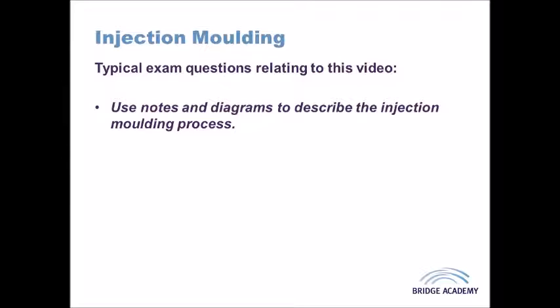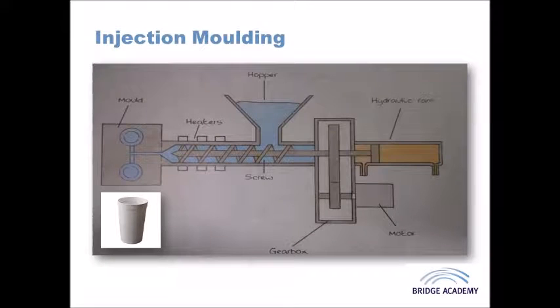The questions relating to this process are going to revolve mostly around you understanding all the stages, all of the main elements involved in the injection moulding process, and the types of plastics or thermoplastics that can be used. I'm just going to talk through the general stages that happen. Right at the top of the diagram you can see you've got what's called the hopper.